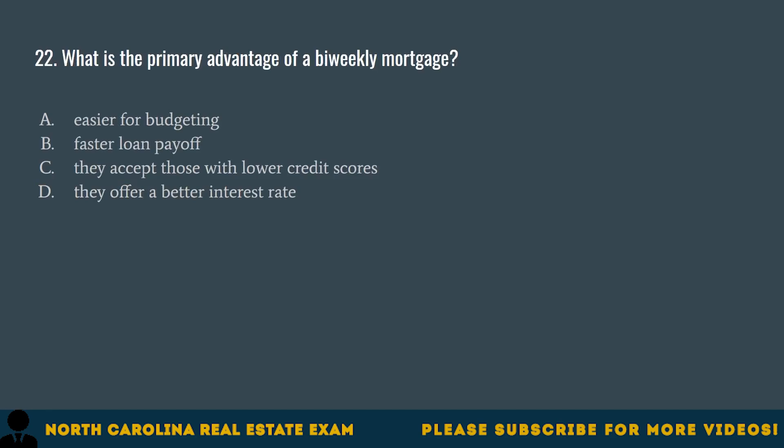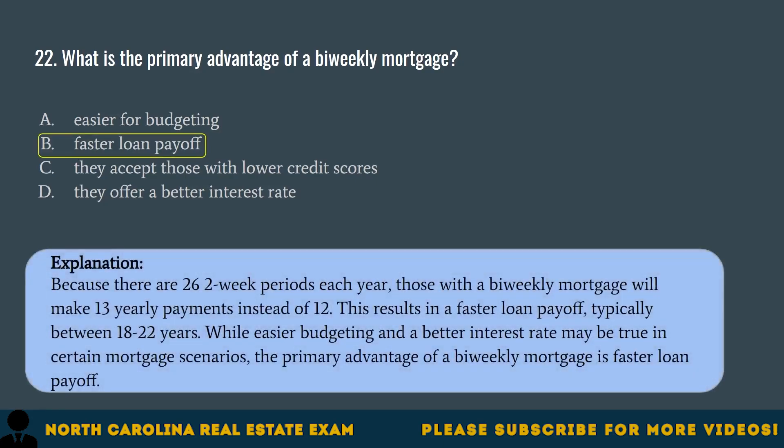Question 22. What is the primary advantage of a bi-weekly mortgage? A. Easier for budgeting. B. Faster loan payoff. C. They accept those with lower credit scores. D. They offer a better interest rate. The correct answer is B. Faster loan payoff. Because there are 26 two-week periods each year, those with a bi-weekly mortgage will make 13 yearly payments instead of 12. This results in a faster loan payoff, typically between 18 to 22 years. While easier budgeting and a better interest rate may be true in certain mortgage scenarios, the primary advantage of a bi-weekly mortgage is faster loan payoff.